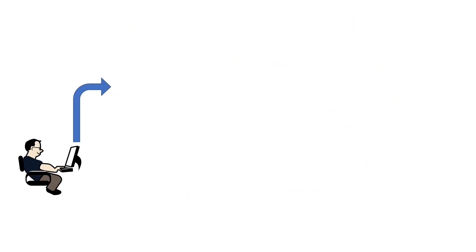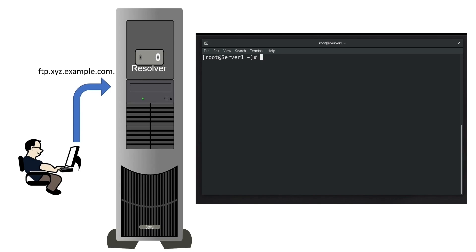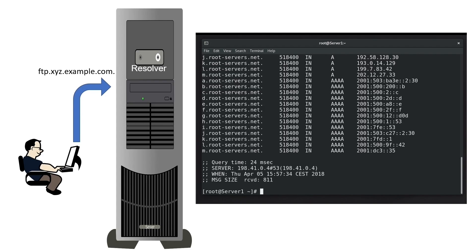Let us take an example to understand this. A resolver system wants to resolve the name ftp.xyz.example.com. By default, resolver systems only know the IP addresses of root name servers. They save them statically in library files. For example, Linux saves root name server's IP addresses in the /var/named/named.ca file.